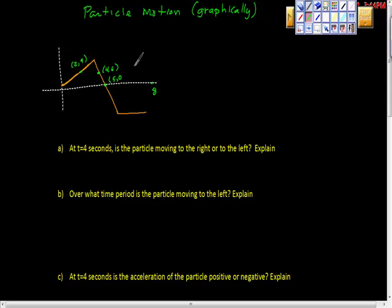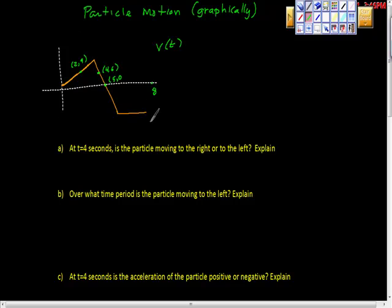Here's my reproduction of a graph I found on an AP document — public domain, so we'll use it. Here's the graph and we're asked to answer these questions. One thing I'd start with is that this is a velocity graph, v of t. This is a velocity graph — because if this were a position graph we'd have different things to talk about.